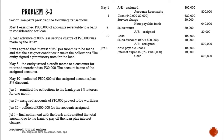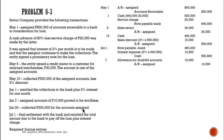On June 7, assigned accounts of 10,000 proved to be worthless. Since there is no hope of collection, we write it off: debit allowance, credit AR-assigned. On June 20, we collected 200,000 for the assigned accounts: debit cash, credit AR-assigned 200,000.